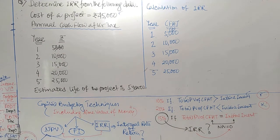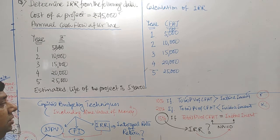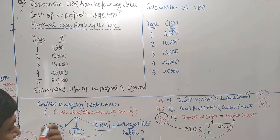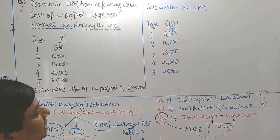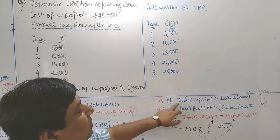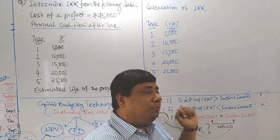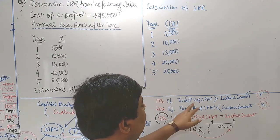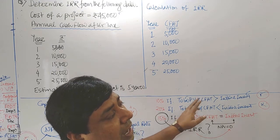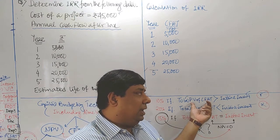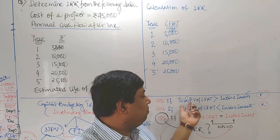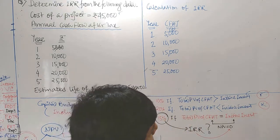IRR and CFAT are provided. As I repeatedly told, our main focus in case of IRR is to calculate NPV. Based on that, we have to process the question. Since you know the formula of NPV, our basic target is to calculate total PV of CFAT. We should target the PV factor and multiply each year's CFAT with the PV factor to calculate PV of CFAT. When you sum up the PV of CFAT column, we get the total PV of CFAT.